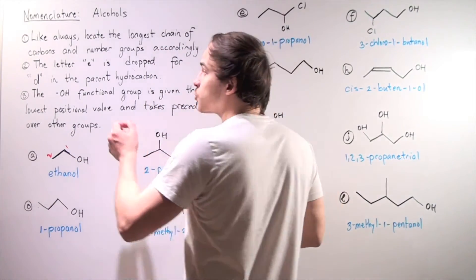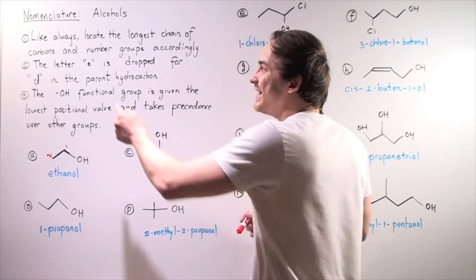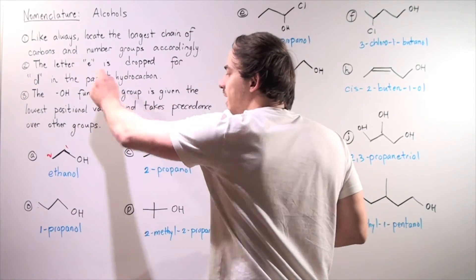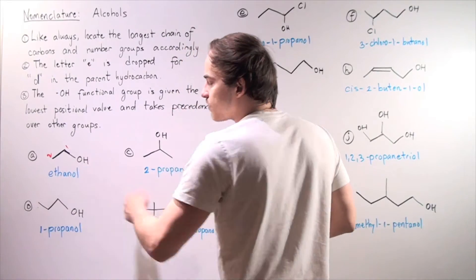According to rule two, we drop the E in ethane and add -ol. So we get ethanol.